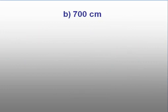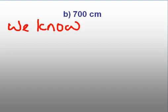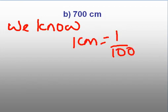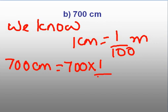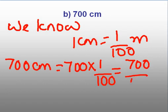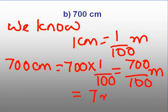Let us do one more question. You have to convert 700 centimeters into meters. First write: we know 1 centimeter is equal to 1 by 100 meter. So here, 700 centimeters will be equal to 700 into 1 by 100. Now, 700 into 1 is 700 by 100 meters, which is equal to 7 meters.